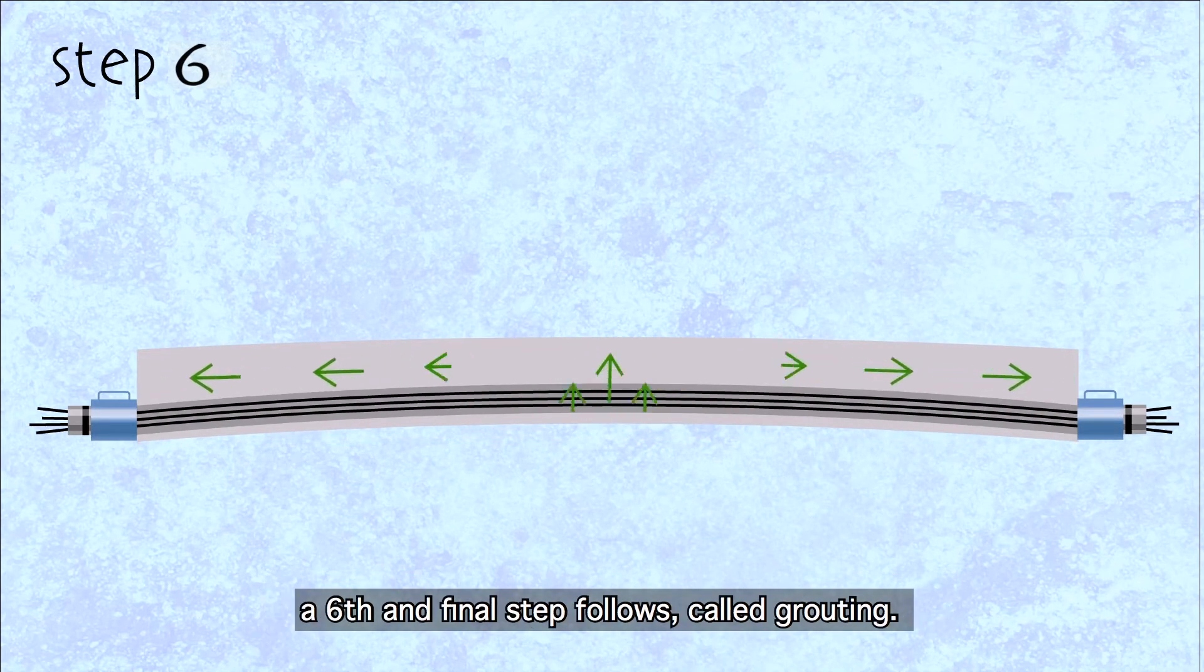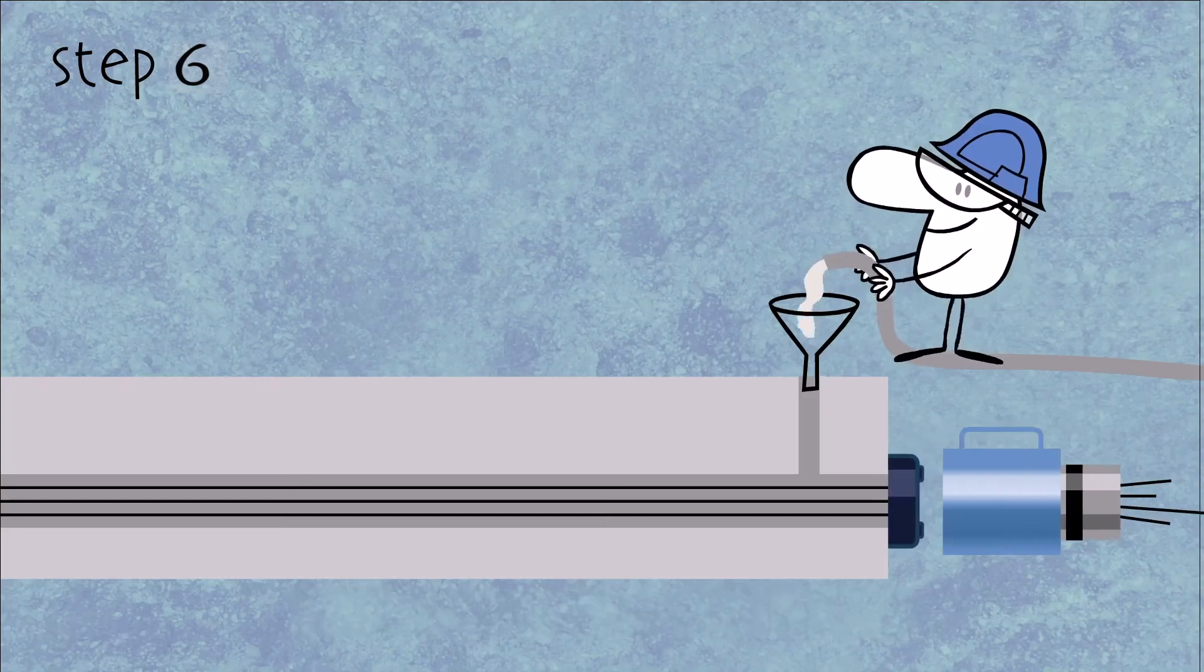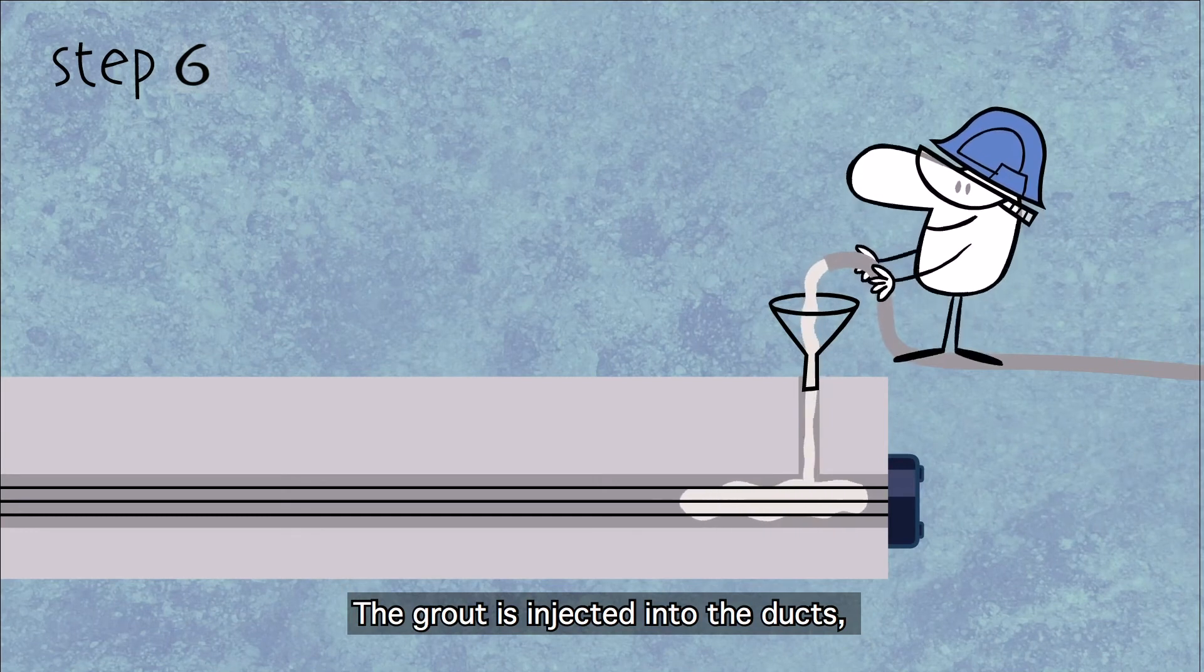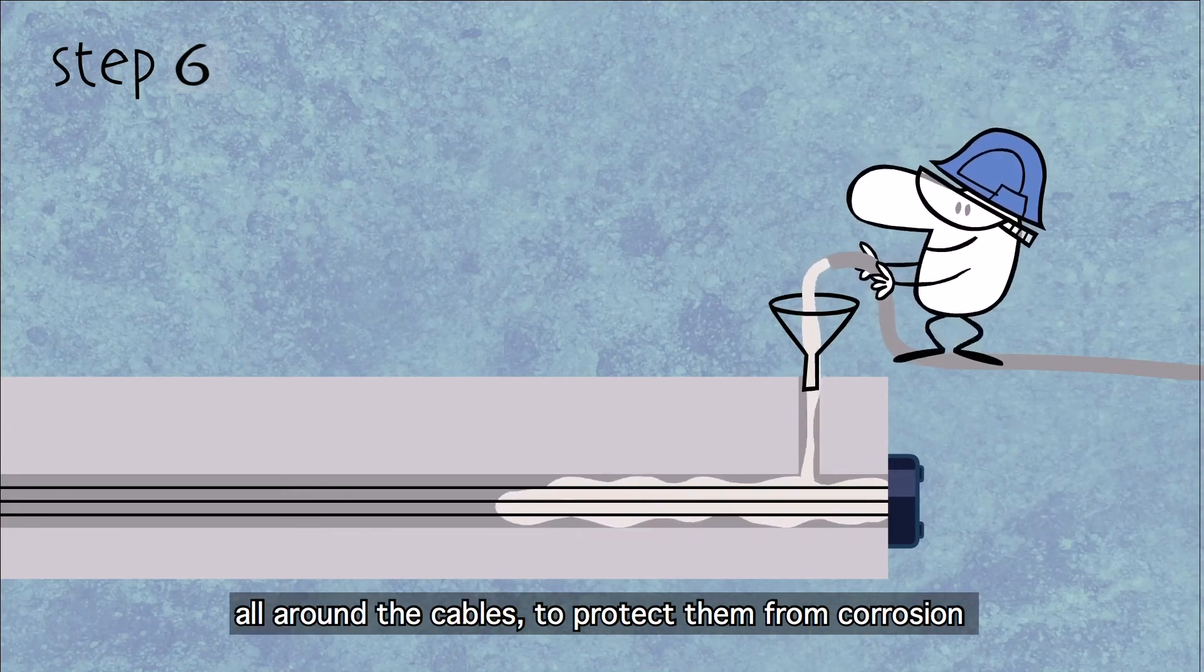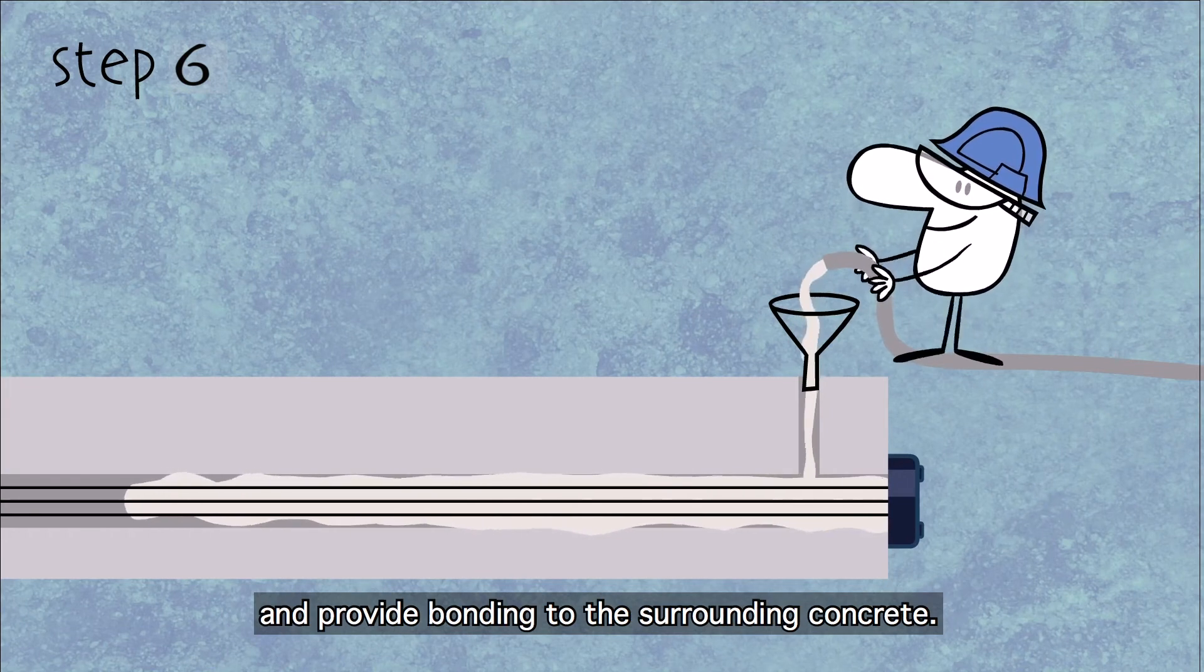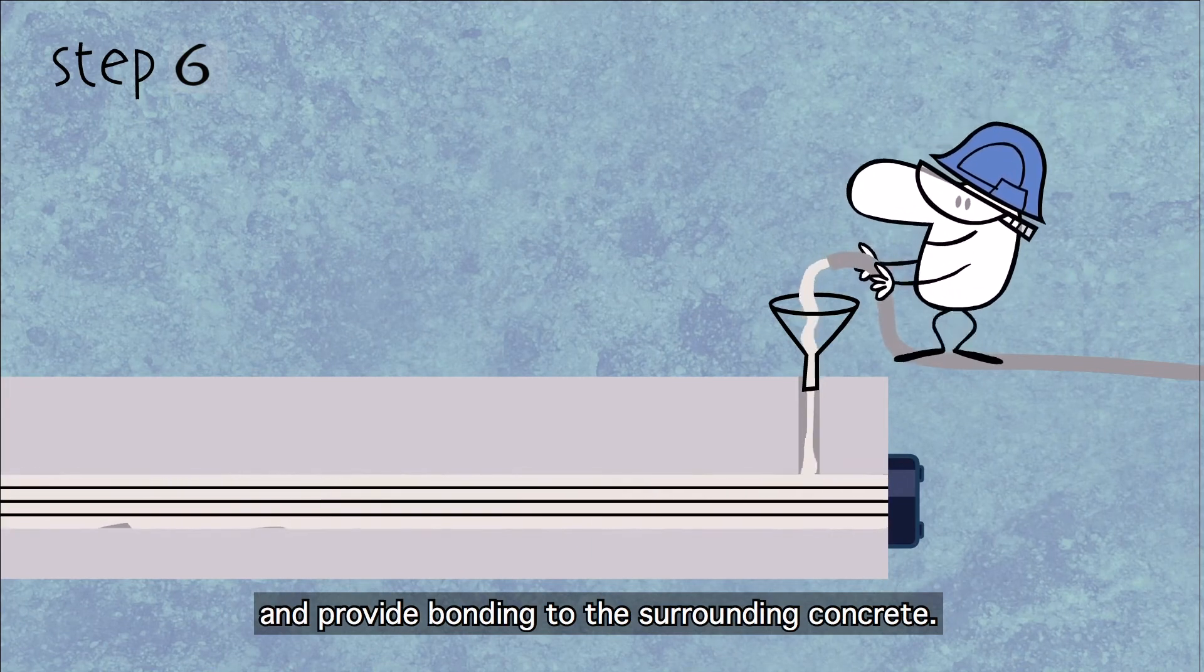After the protruding ends of the strands are cut, a sixth and final step follows, called grouting. The grout is injected into the ducts, all around the cables, to protect them from corrosion and provide bonding to the surrounding concrete.